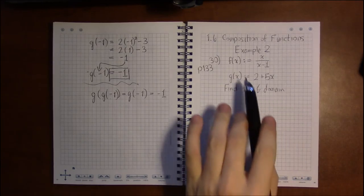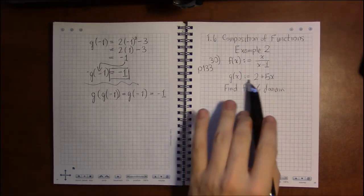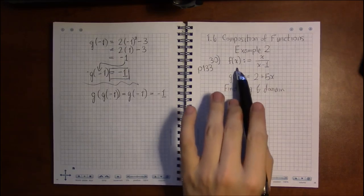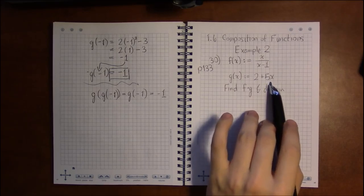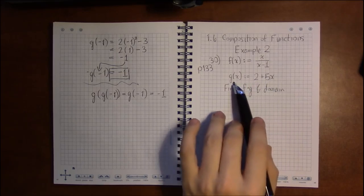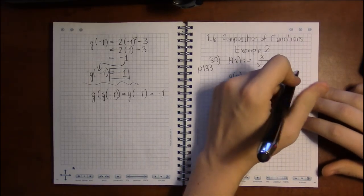So in order to find the domain, we do need to know what the domain of f and g happen to be. G, there's no square roots, no denominators, so there's no restrictions. X can be anything.